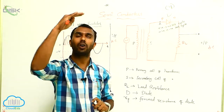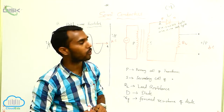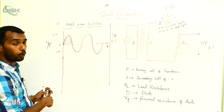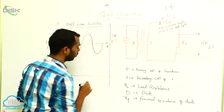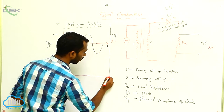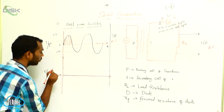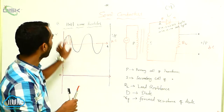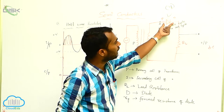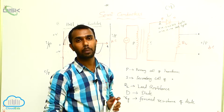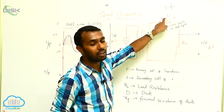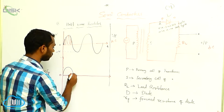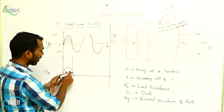In forward bias, current is more. I am extending this one — this one is the input, now I am drawing the output. This positive half cycle passes through the diode because for positive half cycle the diode is in forward bias. That's why it allows the current. This pattern can enter through the diode and I get the same pattern as it is.